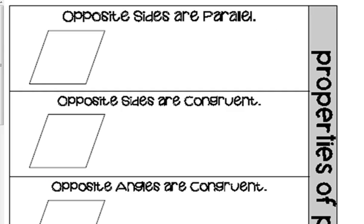So, one of the first properties of parallelograms, and you probably know some of these already, but we're just going to re-emphasize them. Opposite sides are parallel. That's the big one. That's what makes a parallelogram a parallelogram. Opposite sides are parallel.